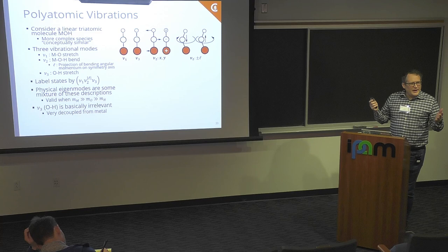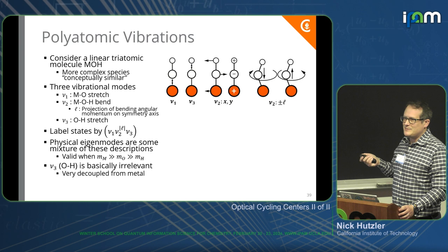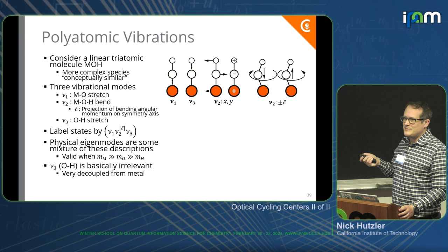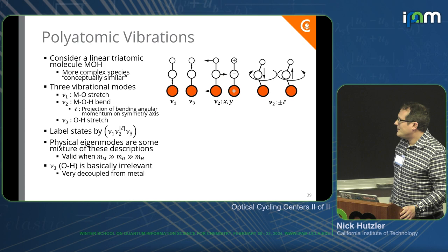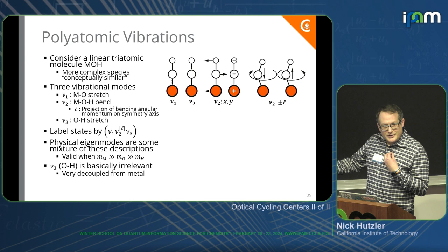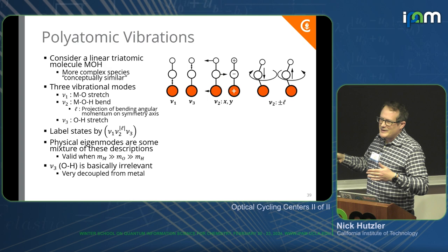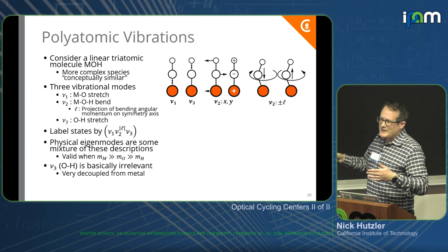If you look up the vibrational modes for a linear triatomic in a textbook, they won't be these — it will be a symmetric stretch and an antisymmetric stretch, and then a bend. But in this case, where M is much heavier than O, which is much heavier than H, the physical eigenstates are actually much better approximated by this picture, though in reality there's some mixture. The OH stretch mode is basically irrelevant because it's very far away from the metal — it's hard to do anything to the electron on the metal and make the OH bond do anything. So it's basically just a spectator, and we're going to ignore it.